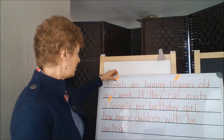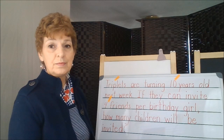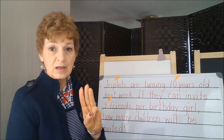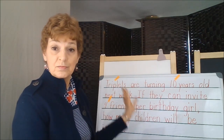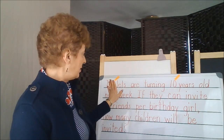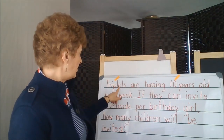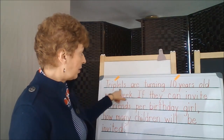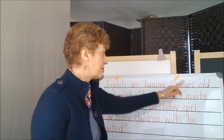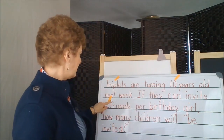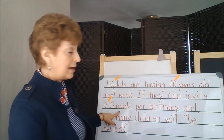There's another word in here that talks about a number, and that would be this one: triplets. Triplets makes you think of three. Maybe we don't need some of the numbers in here, because triplets are people, 10 is the years, and four are friends, which would be people again.